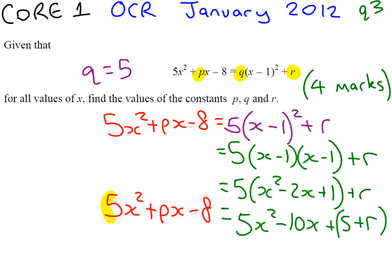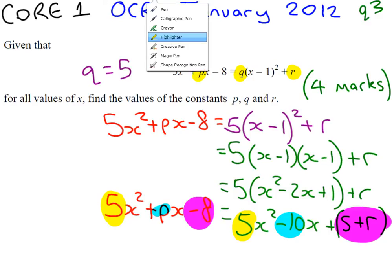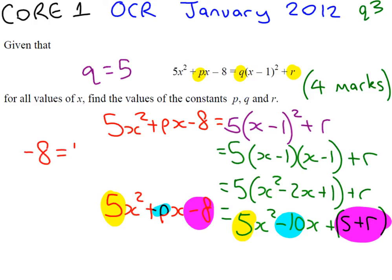We've matched up our q, we've already found that that is equal to 5. Let's match up our p. Well, p must be equal to minus 10. And finally, let's match up our constant term, which matches as minus 8 equals 5 plus r.